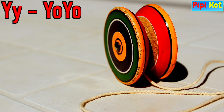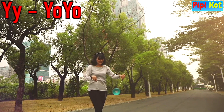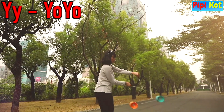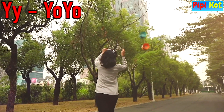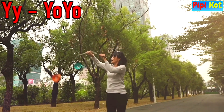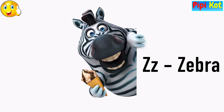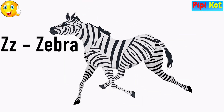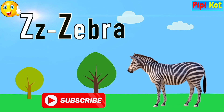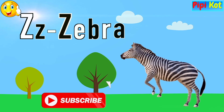Y is for Yo-Yo. Y, Y, Yo-Yo, Y, Y, Yo-Yo, Y. Yo-Yo. Z is for Zebra. Z, Z, Zebra, Z, Z, Zebra, Z. Zebra.